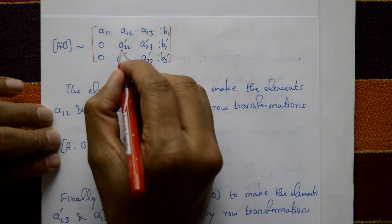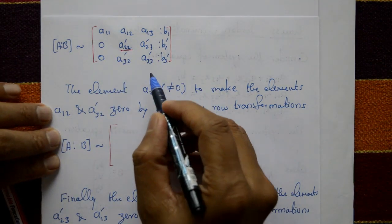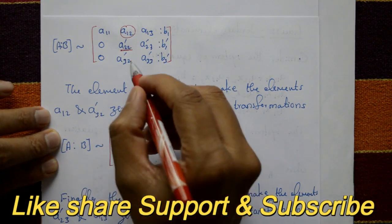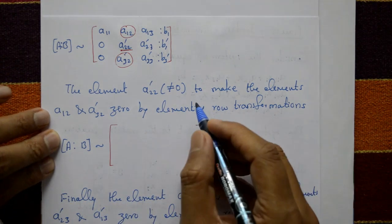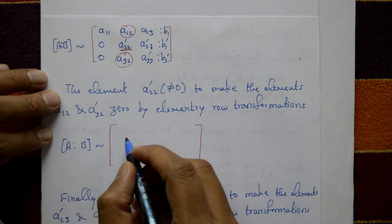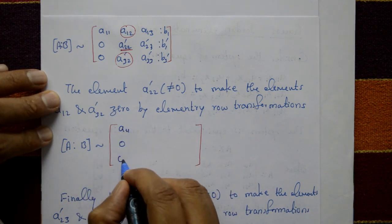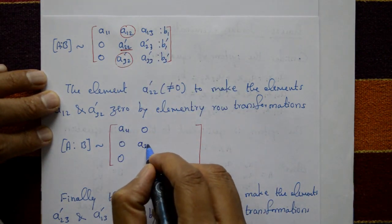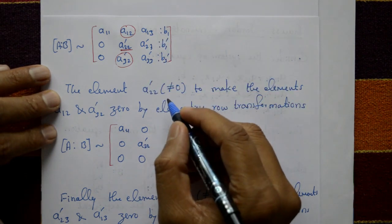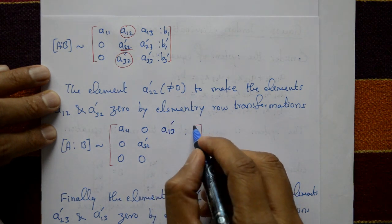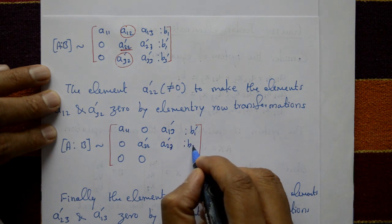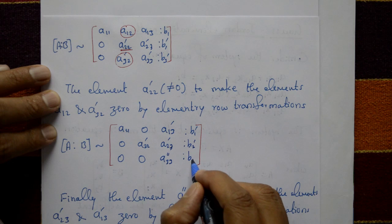Next, using the element a22' as the pivot, we make the elements a12' (first row) and a32' (third row) equal to zero by elementary row transformation. After this step the matrix has zeros in the off-diagonal positions of the second column, giving modified elements a13'', b1'', a23'', b2'', a33'', b3''.